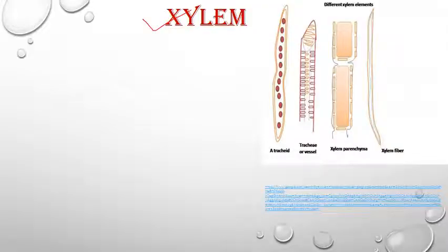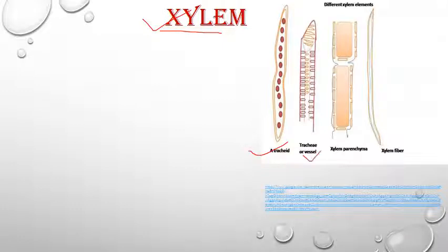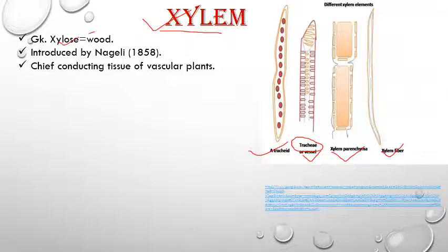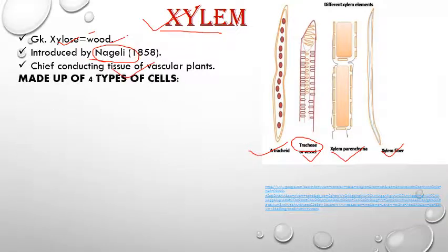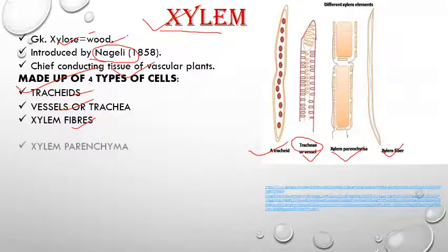First is xylem. The word xylem is derived from the Greek word meaning 'wood'. Secondary xylem is known as wood. The components of xylem are: tracheids, vessels (also called trachea), xylem parenchyma, and xylem fibers. Xylem is the chief water-conducting tissue in vascular plants, containing these four types of cells.